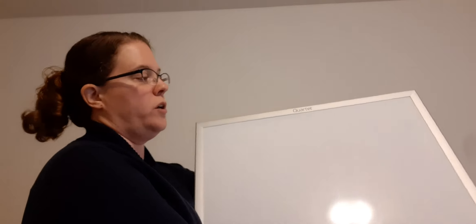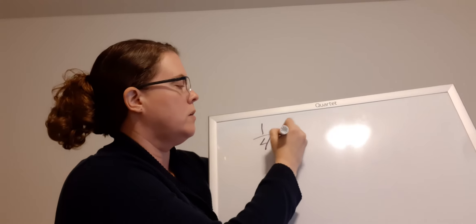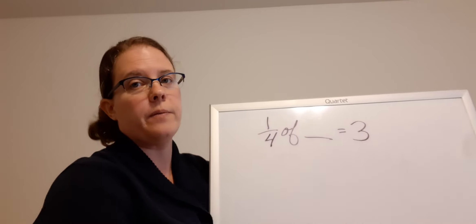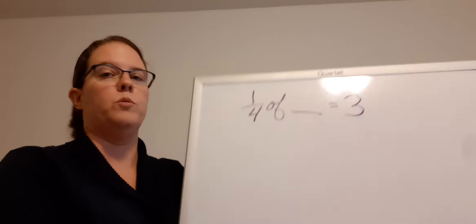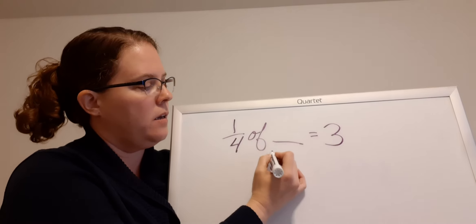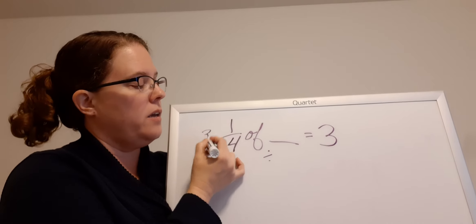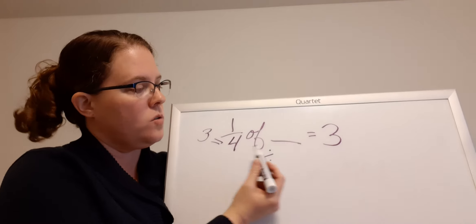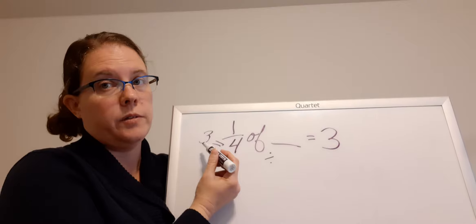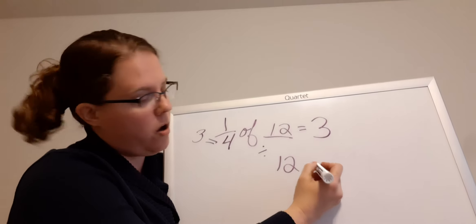So I'm going to write: one fourth of something equals three. So blank divided by four equals three. Since I have my one here, I can do this this way. So blank divided by four equals three — 12. So 12 dog toys.